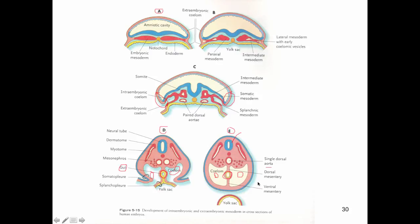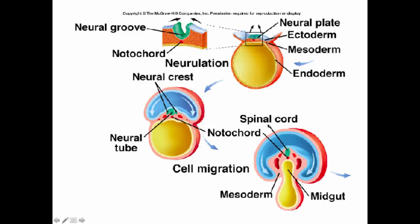If we look here, we've got the embryonic disc and the formation of the neural plate, the neural groove, and the neural tube. You can see that these ends are starting to move in.